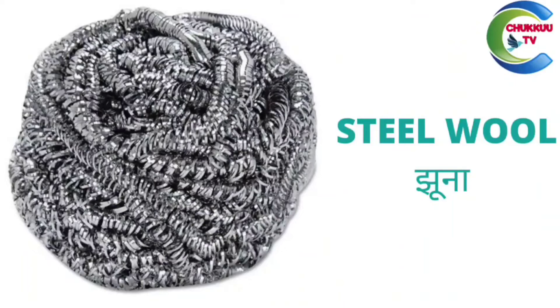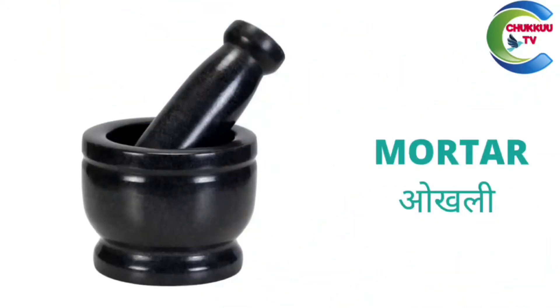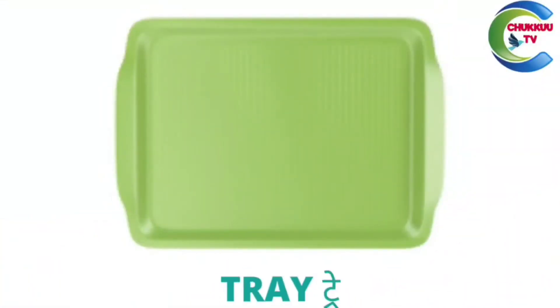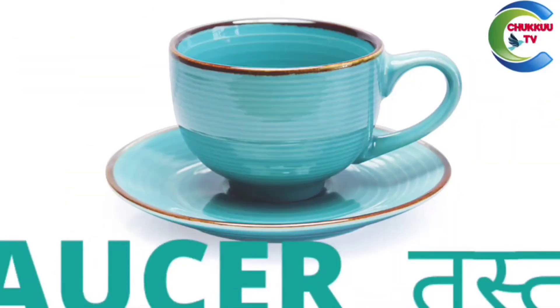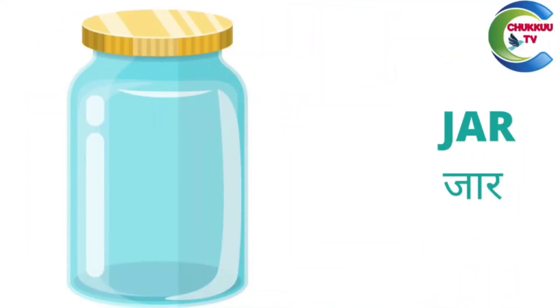This is a steel bowl — jhona. This is pincers — sanshi. This is a mortar — okhli. This is a tray — tray. This is a saucer — tasteri. This is a jar — jar.